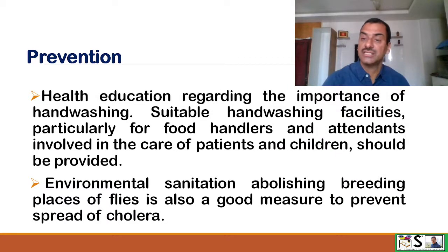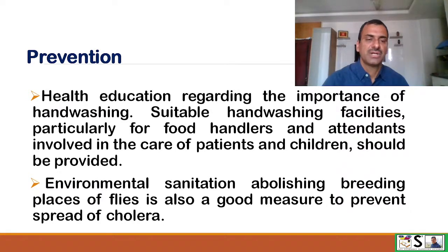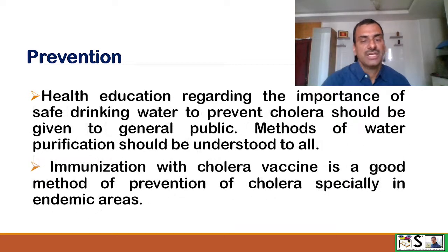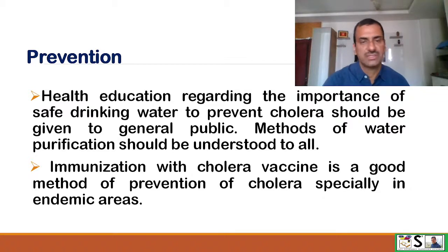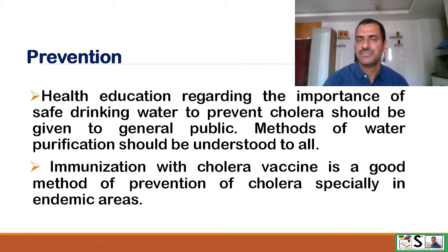Health education regarding the importance of hand washing is essential. Suitable hand washing facilities, particularly for food handlers and attendants involved in the care of patients and children, should be provided — personal hygiene should be maintained. Environmental sanitation and abolishing breeding places of flies are also good measures. Health education about safe drinking water and methods of water purification should be given to the general public. Immunization with cholera vaccine is also a good method of prevention, especially in endemic areas.